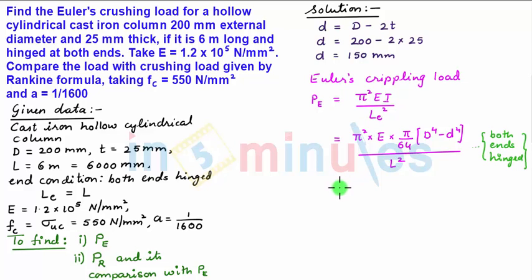Now upon substituting the values we get pi square into 1.2 into 10 to the power 5 into pi by 64 into 200 to the power 4 minus 150 to the power 4 the whole upon 6000 square.